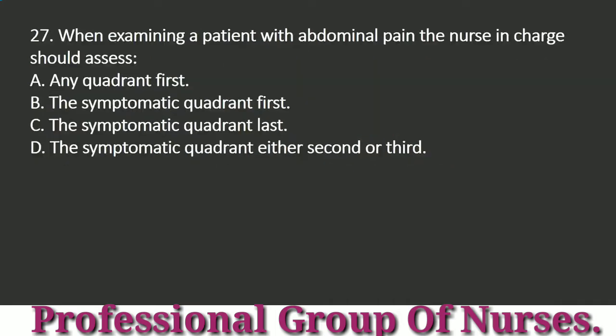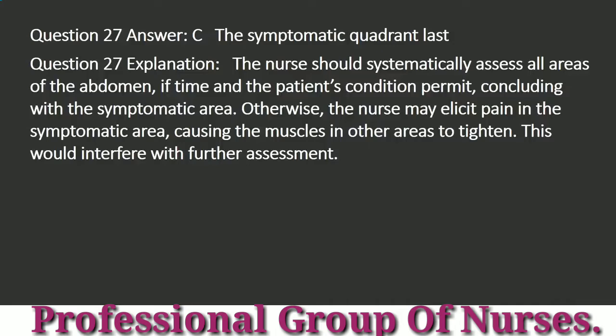Question 27: When examining a patient with abdominal pain, the nurse in charge should assess: a. Any quadrant first. b. The symptomatic quadrant first. c. The symptomatic quadrant last. d. The symptomatic quadrant either second or third. Answer: c. The symptomatic quadrant last. Explanation: The nurse should systematically assess all areas of the abdomen, if time and the patient's condition permit, concluding with the symptomatic area. Otherwise, the nurse may elicit pain in the symptomatic area, causing the muscles in other areas to tighten, which would interfere with further assessment.